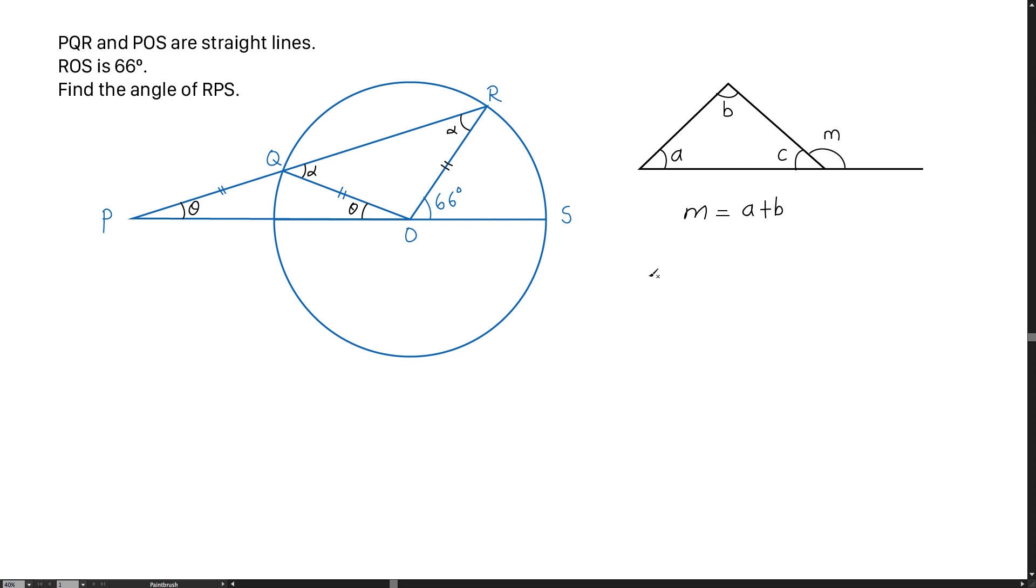By looking at the triangle angle of POR, we know that POR is actually the larger part of the triangle. 66 degrees from here is the sum of theta and alpha. So this is our first equation.